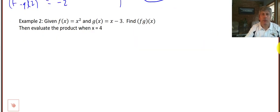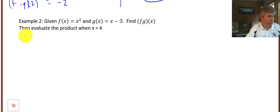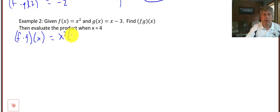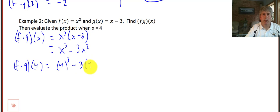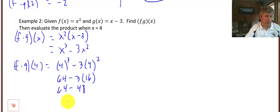That will also apply to finding the product — find f times g of x. We have to multiply those two together. That's going to be x squared times x minus 3. We distribute x squared and get x cubed minus 3x squared. Then evaluate the product when x equals 4: f times g of 4 equals 4 cubed minus 3 times 4 squared, which is 64 minus 3 times 16, or 64 minus 48, which is 16.